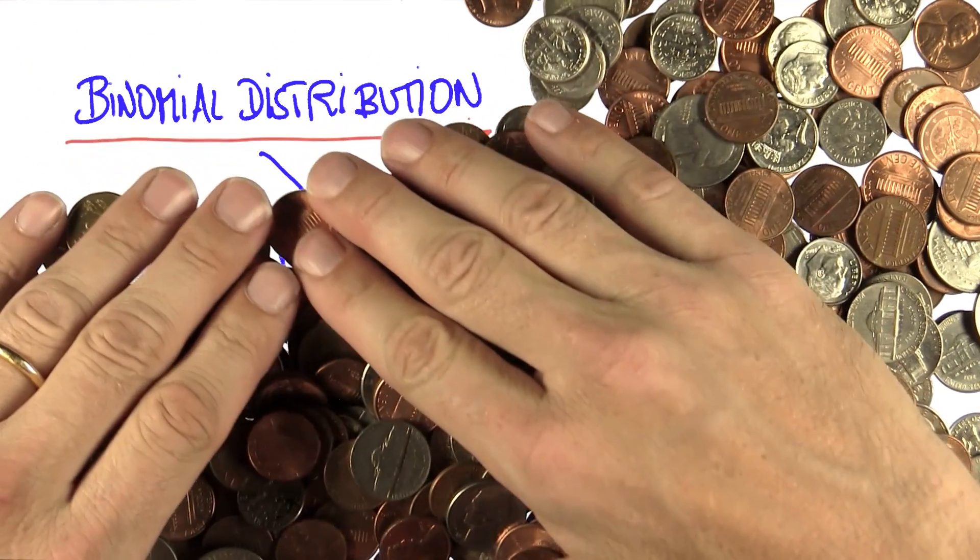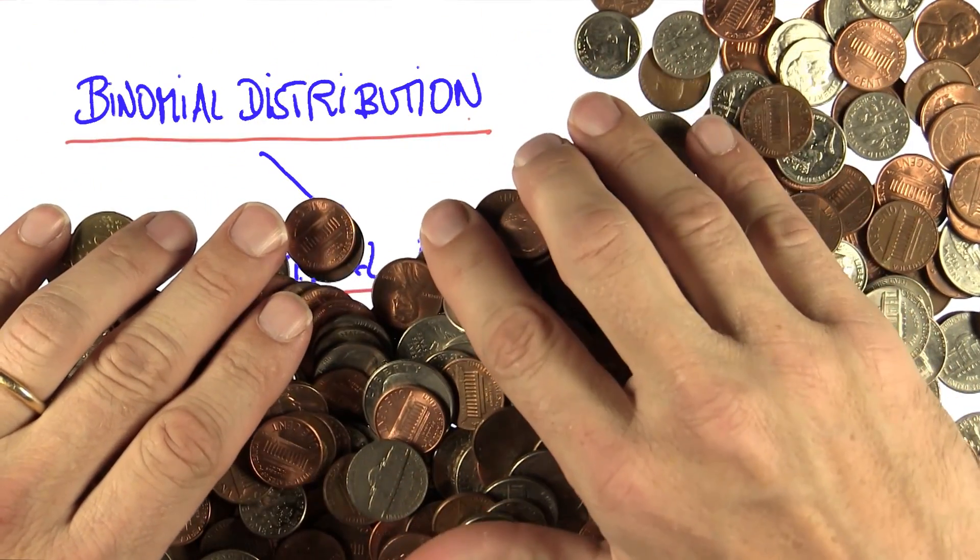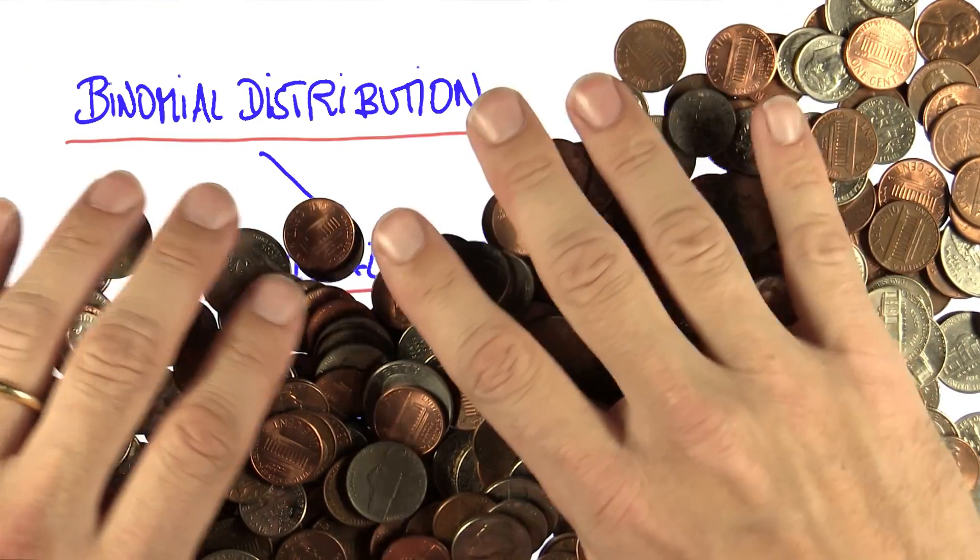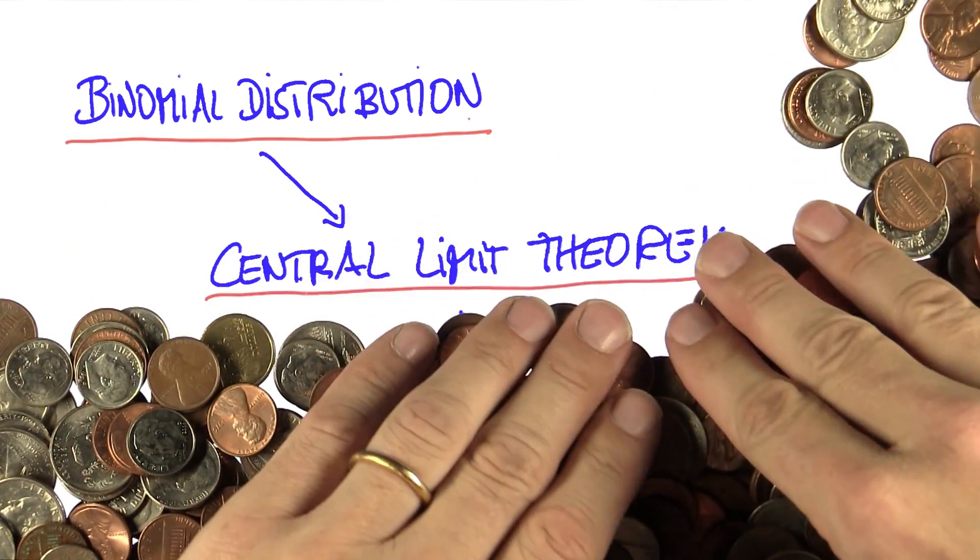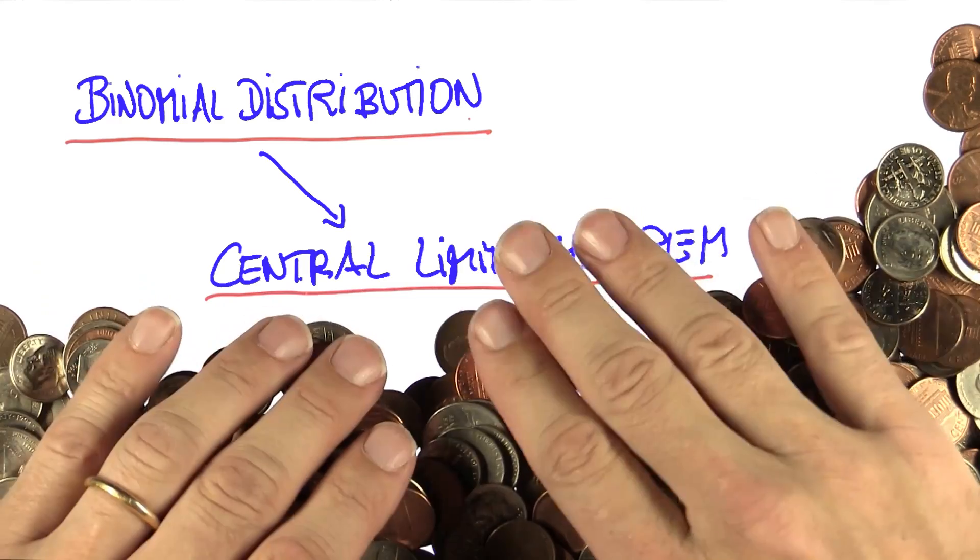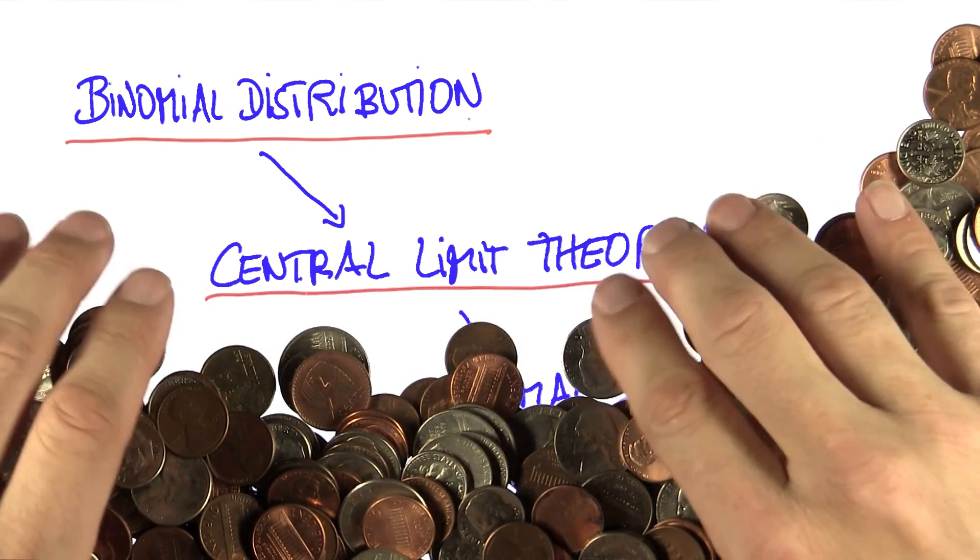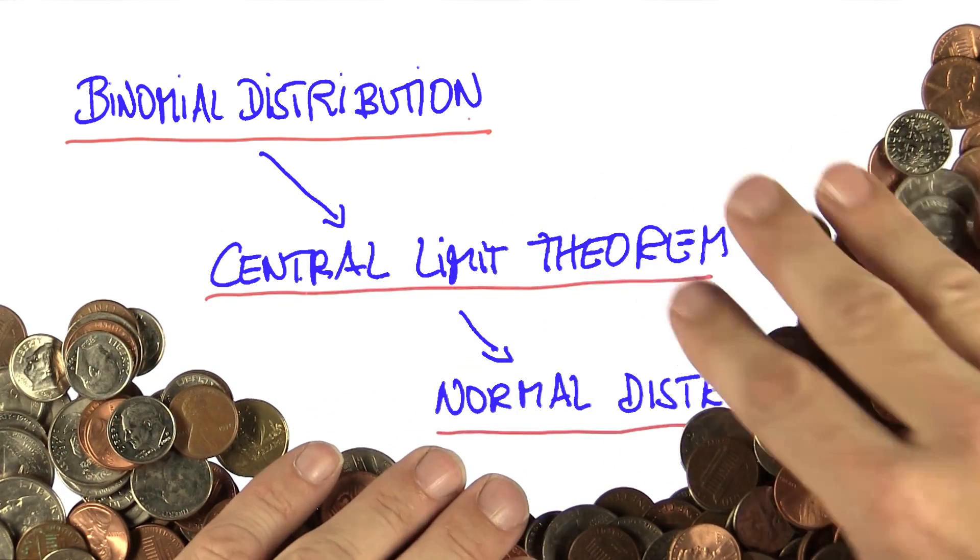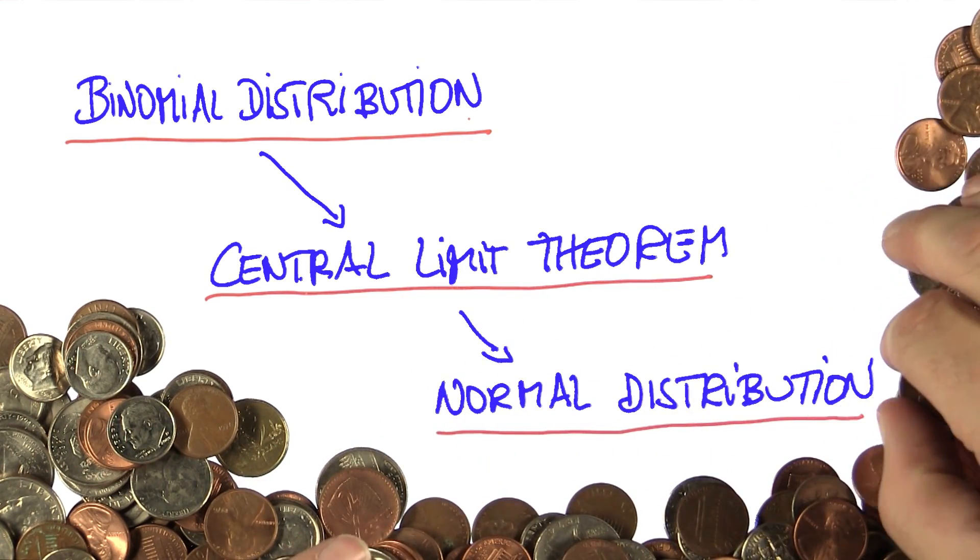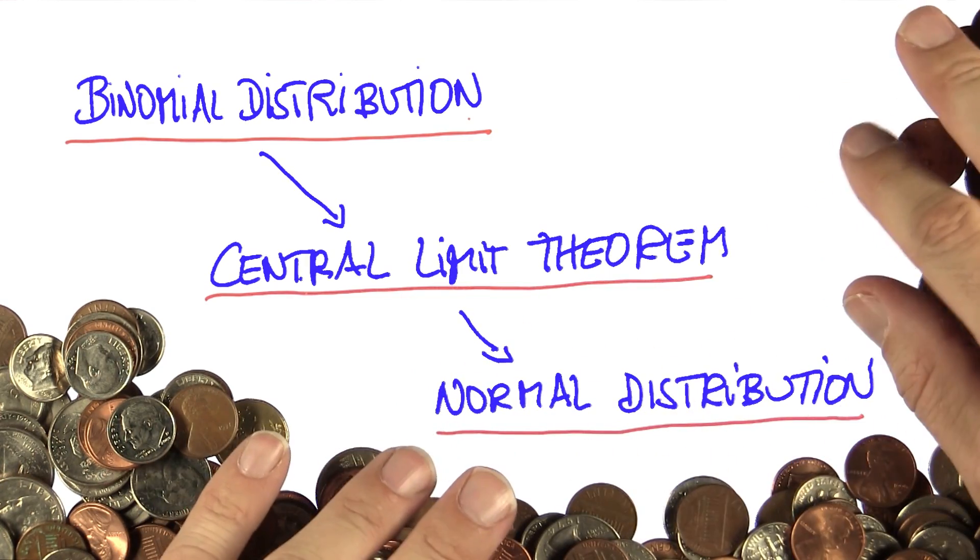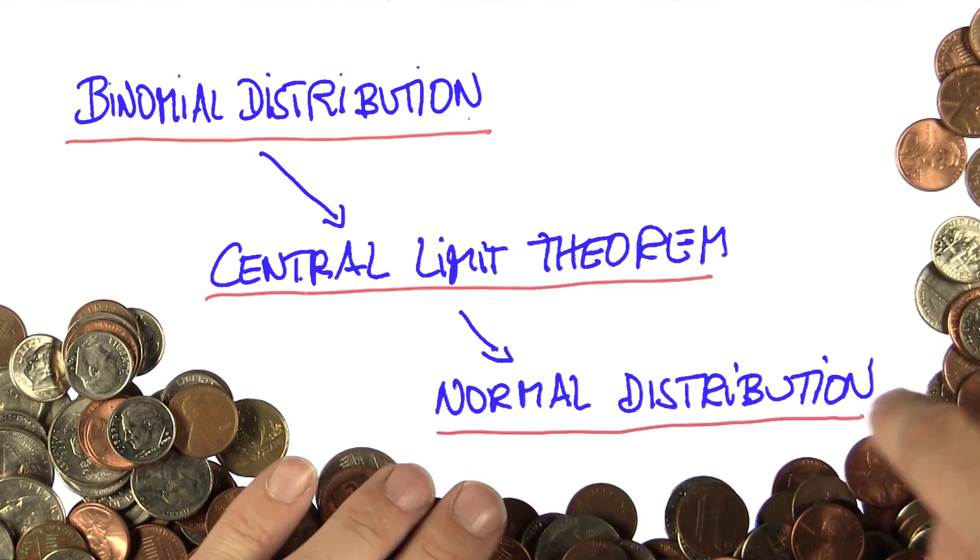We start out with the binomial distribution that you're familiar with from our last unit, and then we move into the central limit theorem, which basically means we take the number of coin flips to infinity. From that, we arrive at the normal distribution, which is the basis to so much in statistics. All of testing and confidence intervals are tied to the normal distribution.